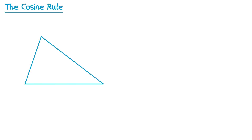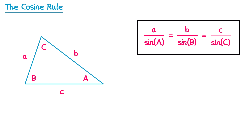In the video on the sine rule we started by drawing a triangle like this, and labelling the sides a, b, and c, and the corresponding opposite angles as capital A, capital B, and capital C. And then throughout that video we used the sine rule, which looks like this.